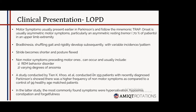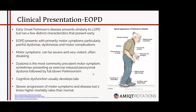Comparing with early onset Parkinson's disease, it has distinct characteristics: dystonias, dyskinesias, and motor complications are most prominent. Dystonias are the most common presenting feature, sometimes as exercise-induced paroxysmal dystonia followed by full-blown Parkinsonism. Multiple studies show EOPD is of a purely motor form; non-motor symptoms develop much later. Motor symptoms can be very severe and often disabling. Cognitive dysfunction usually develops late. There is slower progression of motor symptoms, but two times higher mortality rates than normal.